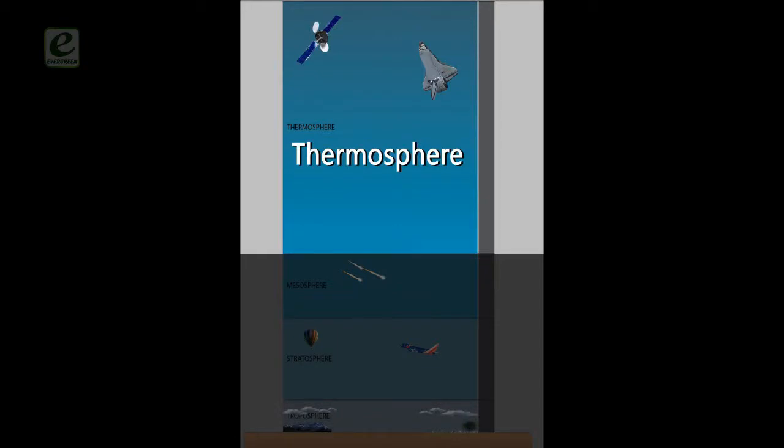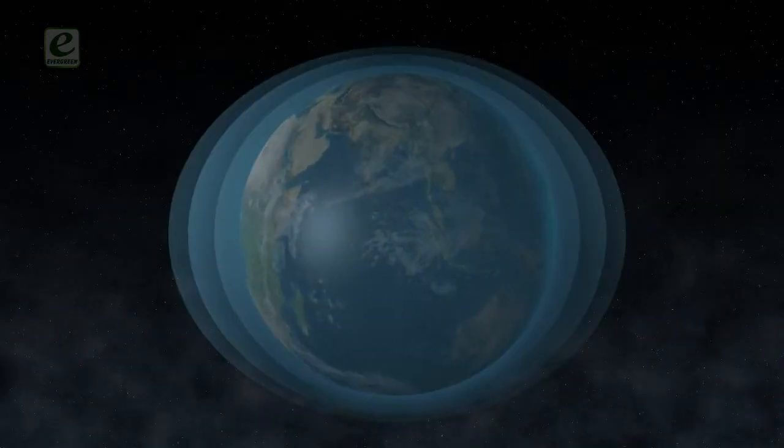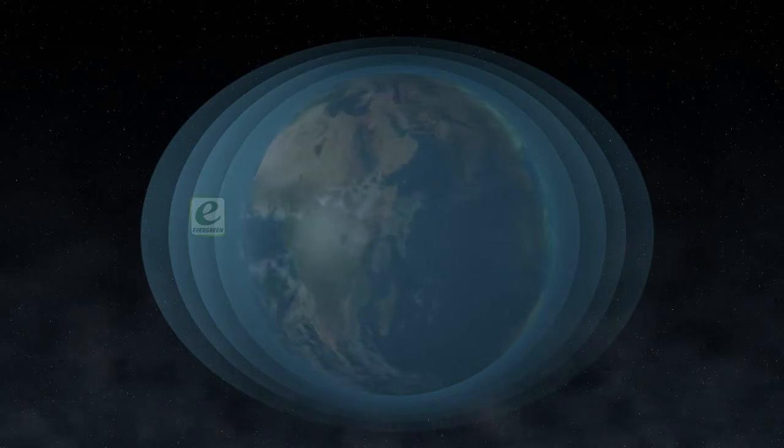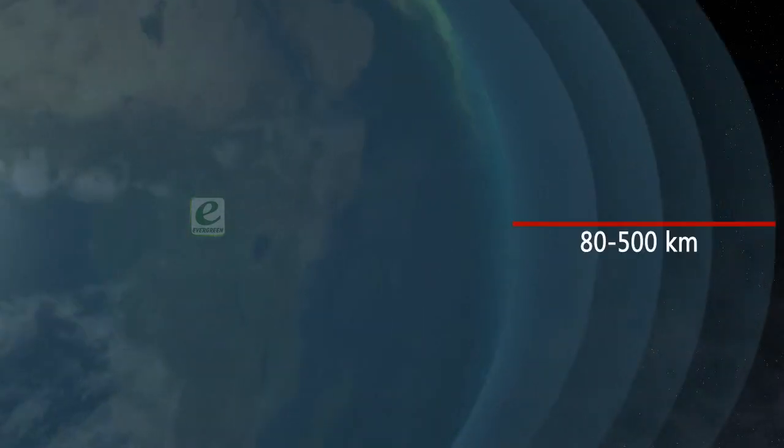Thermosphere. The thermosphere lies above the mesosphere. It extends from about 80 kilometers to between 500 and 1000 kilometers above our planet.